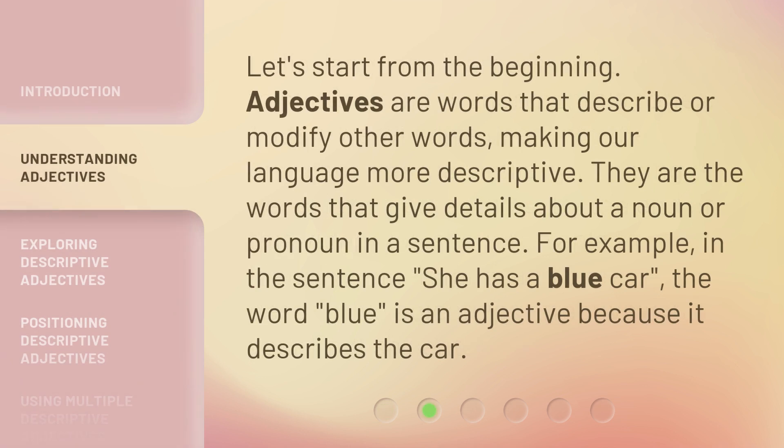Let's start from the beginning. Adjectives are words that describe or modify other words, making our language more descriptive. They are the words that give details about a noun or pronoun in a sentence. For example, in the sentence 'She has a blue car,' the word 'blue' is an adjective because it describes the car.